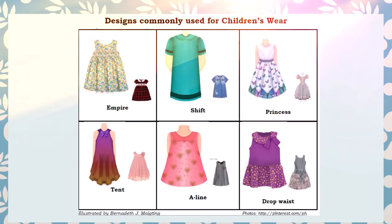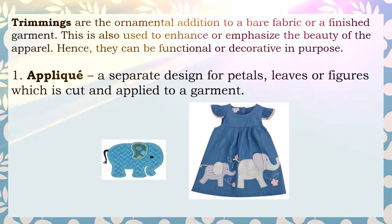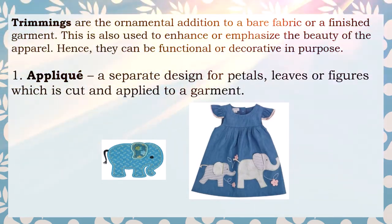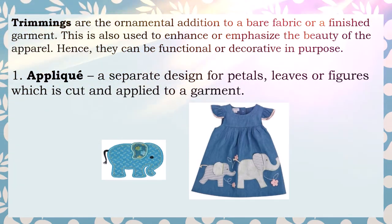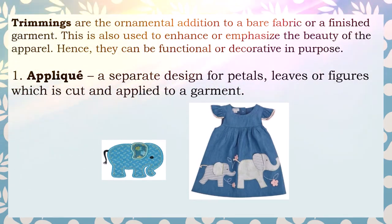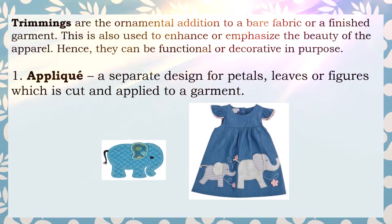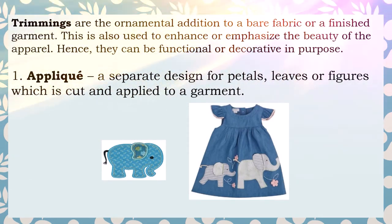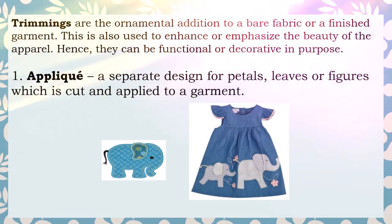Now let's go to trimmings. What are trimmings? Trimmings are ornamental additions to a bare fabric or a garment. They are also used to enhance or emphasize the beauty of the apparel — they can be functional or decorative. Number one is appliqué: a separate design of petals, leaves, or figures which is cut and applied to a garment.